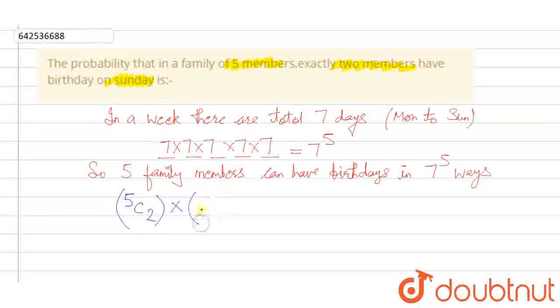The remaining 3 members would have 6 options left because they cannot be Sunday. So they would have 6, 6 options. This is the case when exactly 2 members are having birthday on Sunday.